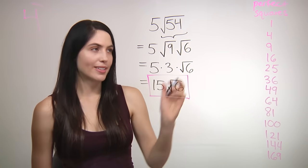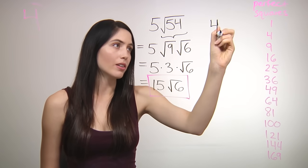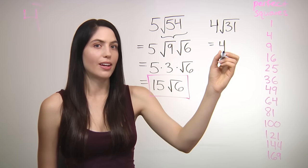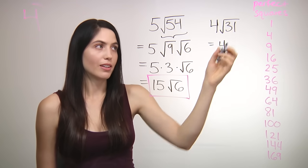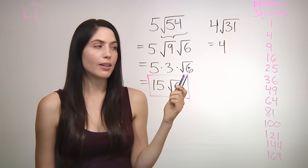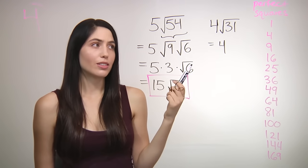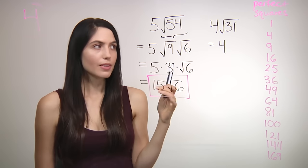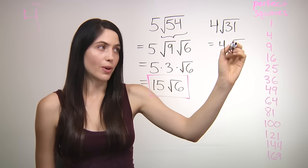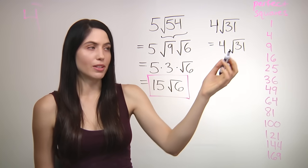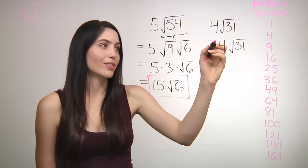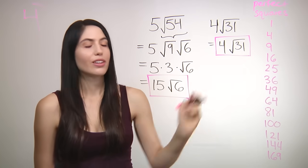Let's try one more quick example that's a product. Say you have 4 times square root of 31. Keep the constant 4, but try to simplify the square root of 31. Take the number 31 and try dividing by the perfect square numbers — 31 divided by 4, 31 divided by 9 — none of them go in evenly. In fact, 31 itself is a prime number, so it has no factors other than 31 and 1. So it's okay if sometimes a larger number can't be broken down anymore. The answer is 4 root 31.